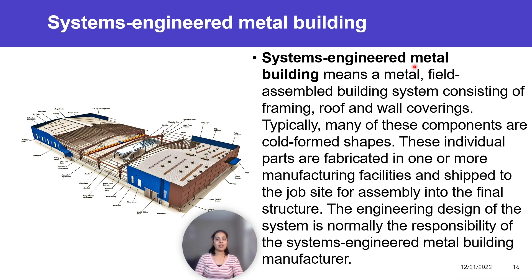Systems engineered metal building means a metal assembled building system consisting of framing, roof, and wall coverings. Typically, many of these components are cold-formed shapes. These individual parts are fabricated in one or more manufacturing facilities and shipped to the job site for assembly into the final structure. The engineering design of the system is normally the responsibility of the systems engineered metal building manufacturer.